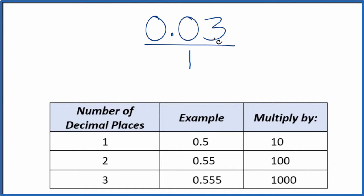Next, we need to get 0.03 to a whole number. And we can do that. See, we have one, two decimal places. So when we have two decimal places, we can just multiply it by 100.